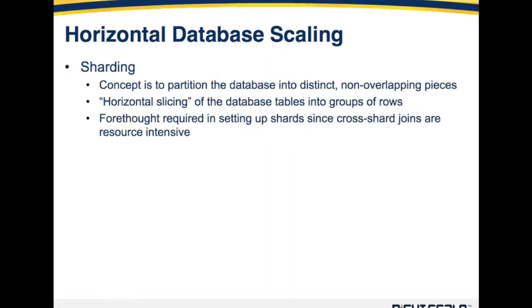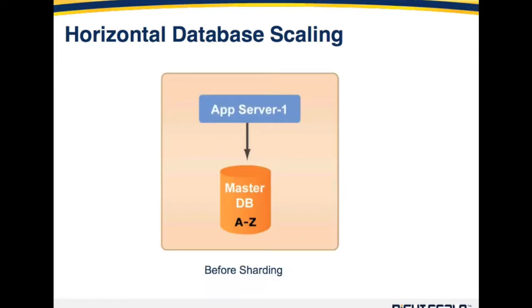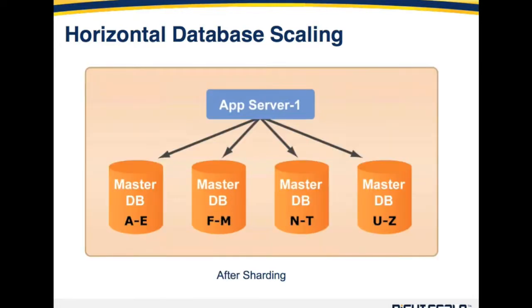Another effective way to accomplish horizontal database scaling is sharding. The concept is that you partition your database into distinct, non-overlapping pieces — essentially a horizontal slicing of your database tables into groups of rows. While great benefit can be gained from sharding, forethought is required in setting up the shards, since any cross-shard joins — a query involving multiple instances — will be slow and resource-intensive. After sharding, the same app server accesses four different instances implementing one logical master database, each with a distinct, non-overlapping portion of the original data. The app server needs to be smart enough to know where each shard is, or have a proxy with that intelligence layer built in.